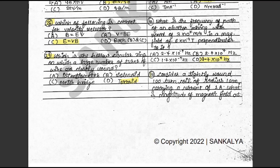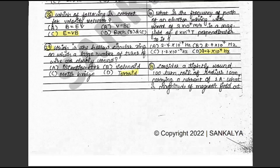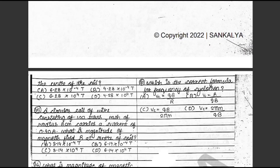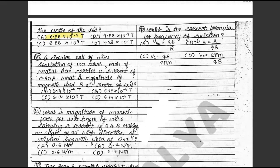Question 34: Consider a tightly wound 100-turn coil of radius 10 cm carrying a current of 1 ampere. What is the magnitude of magnetic field at the center of the coil? The answer is A: 6.28 × 10⁻⁴ Tesla. This is in the textbook illustration 7.